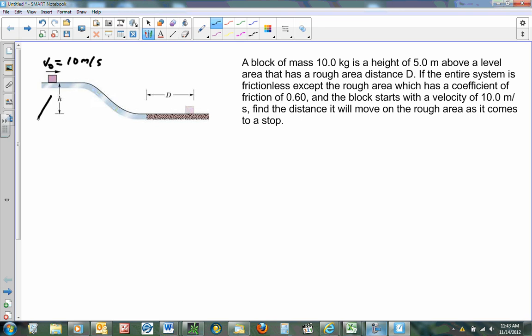The first thing we have to do is look here and decide what kind of energies does it have and what is the total energy. Well, since it's moving, we know it has kinetic. And since it is a distance or height h above this level area, it also has potential gravitational. So we have to figure out what those numbers are.